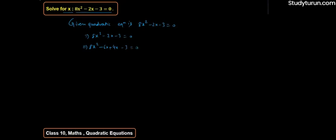Dekhiye, humne joh split kia hai, woh splitted terms ka product hoga: minus 6x into 4x hoga minus 24x². Aur 8x² into minus 3, joh remaining terms se unka product minus 24x² hoga. Iska matlab joh humne split kia middle term ko, woh sahi kia hai.